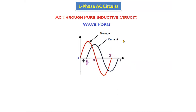If we take the current waveform, it is starting from 90 degrees. The positive half cycle is ending beyond 180 degrees and the negative half cycle is ending beyond 2 pi degrees. So there is a phase difference between voltage and current — that phase difference is phi equal to 90 degrees.